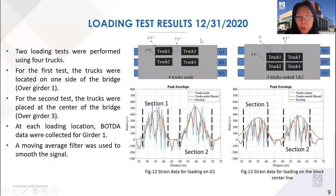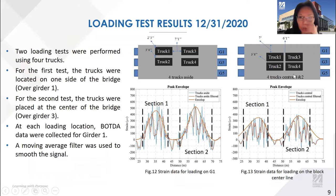On December 31st, we conducted the second day of field testing with four trucks stopped on the bridge. In the first set of tests, trucks were stopped closer to girder 1, and in the second set, trucks were stopped at the center of the bridge. As expected, the strain response collected from girder 1 shows higher strain values when trucks were near girder 1 compared to when they were located at the center of the bridge.